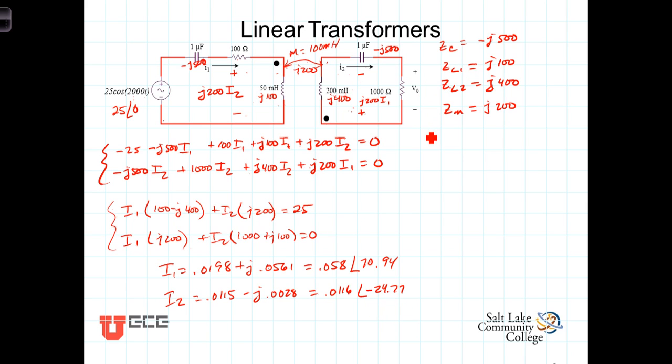Now Vout which is what our goal was, Vout then is simply equal to the 1000 ohms times I2 which is going to equal 1000 times that gives us 11.6 angle negative 24.77 volts.